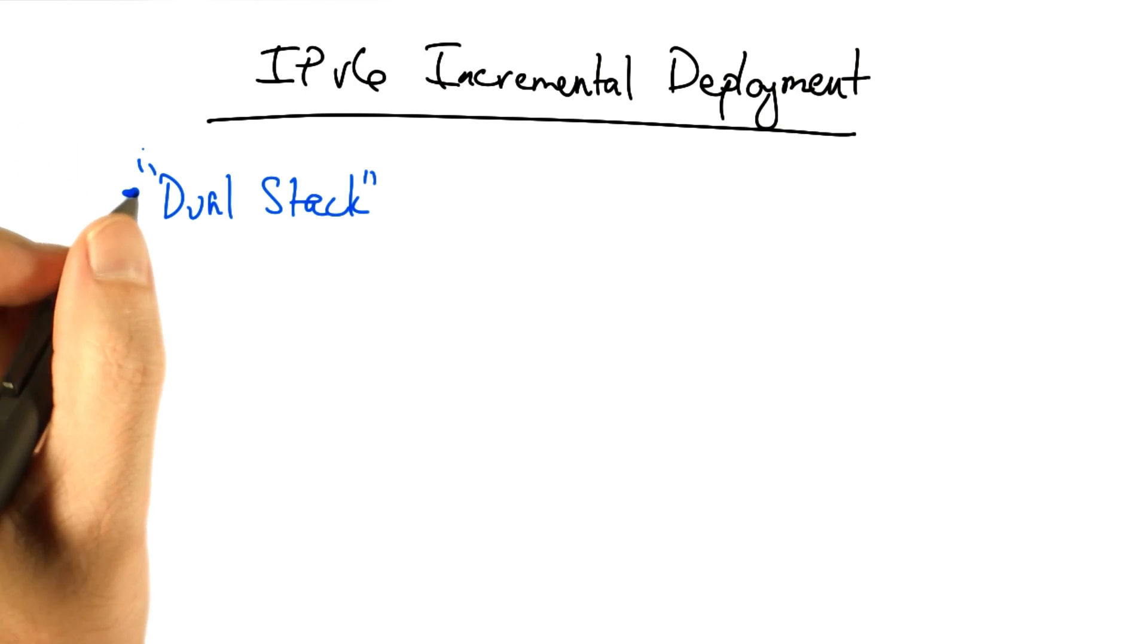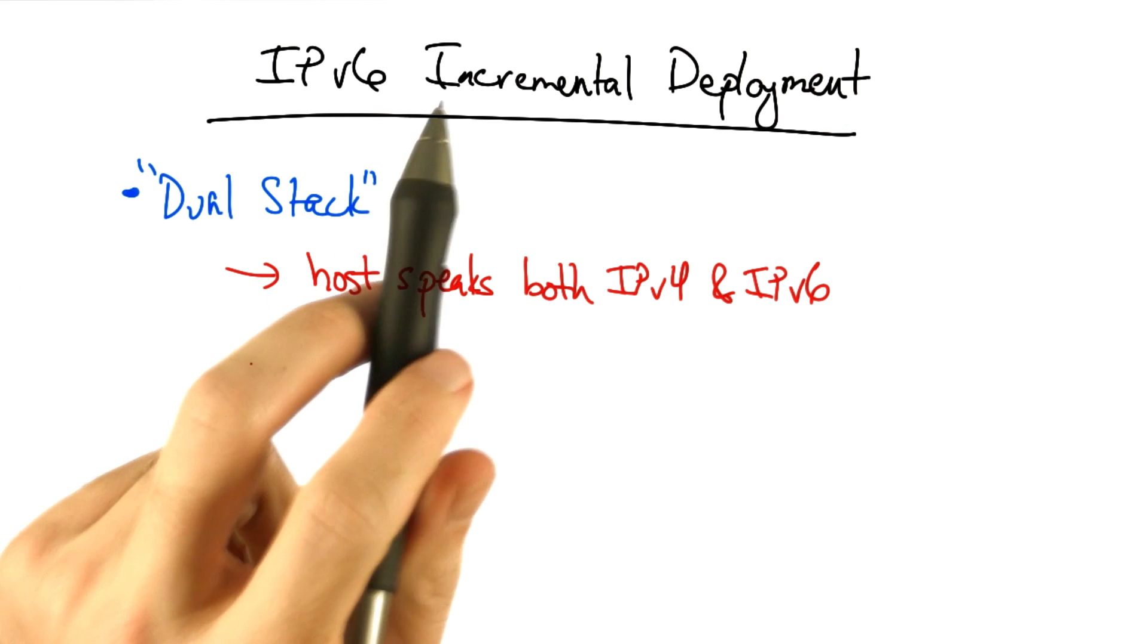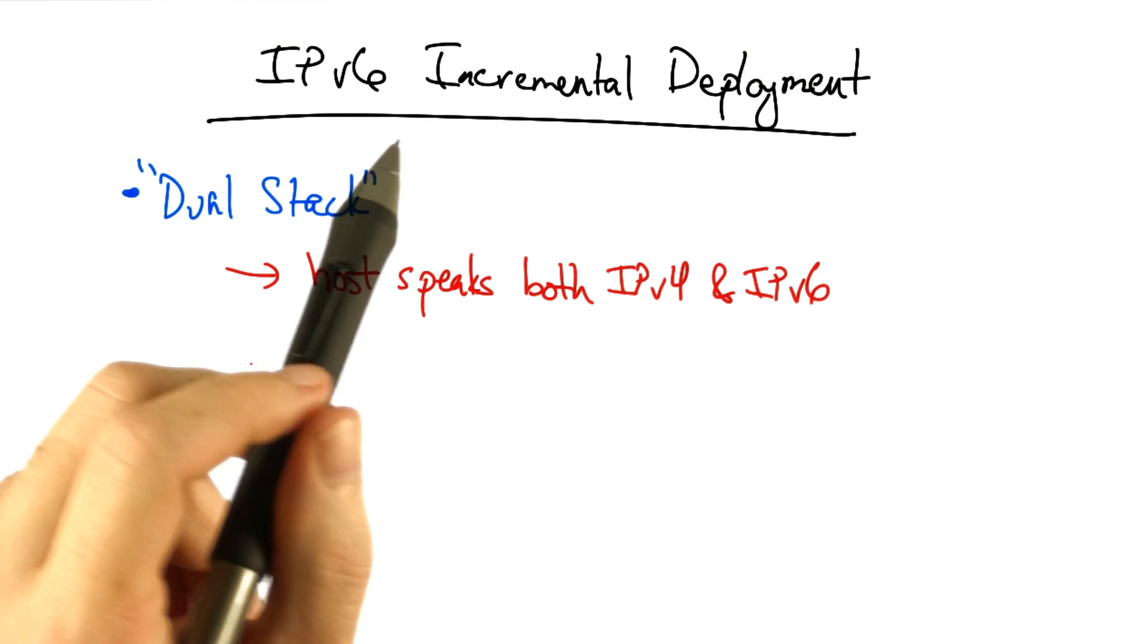One is what's called a dual stack deployment. In a dual stack deployment, a host can speak both IPv4 and IPv6. It communicates with an IPv4 host using IPv4 and communicates with an IPv6 host using IPv6.